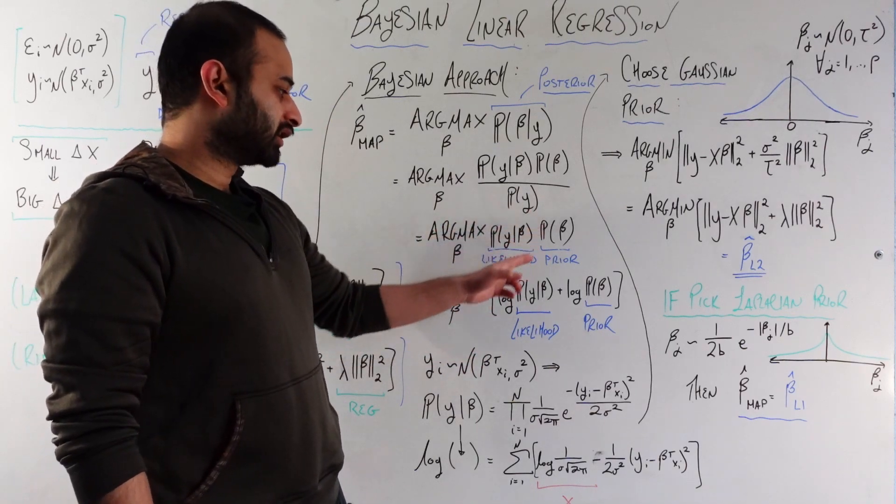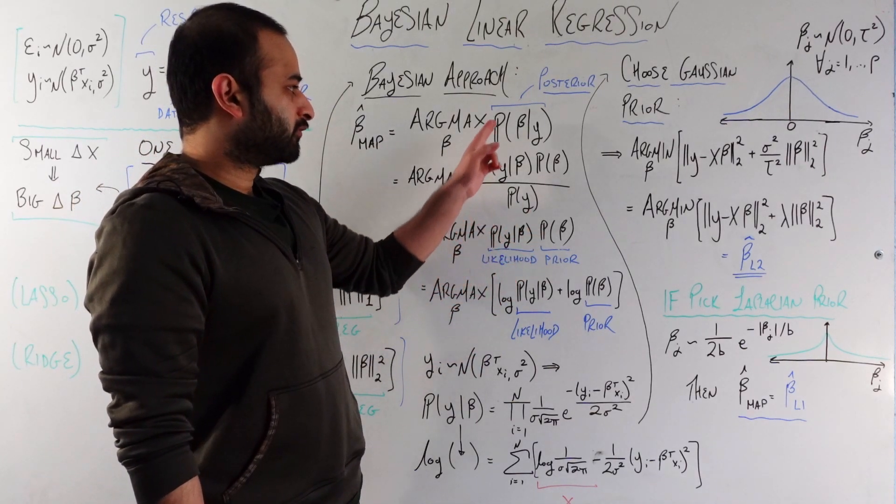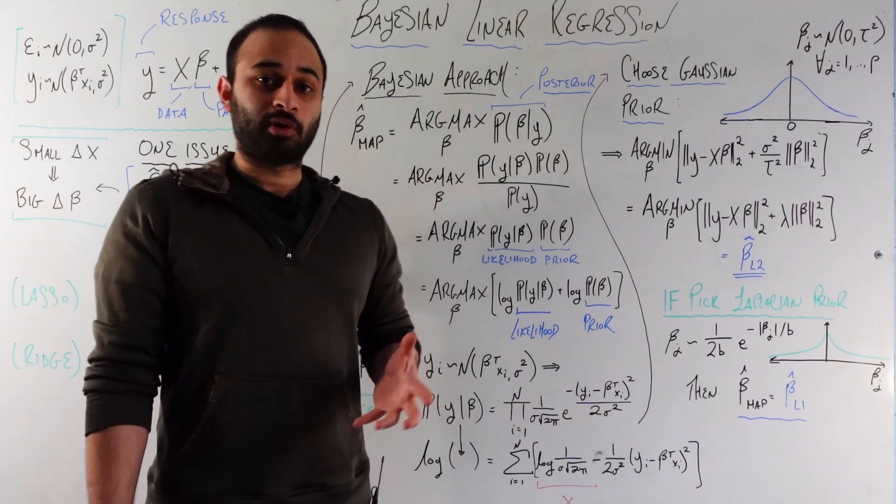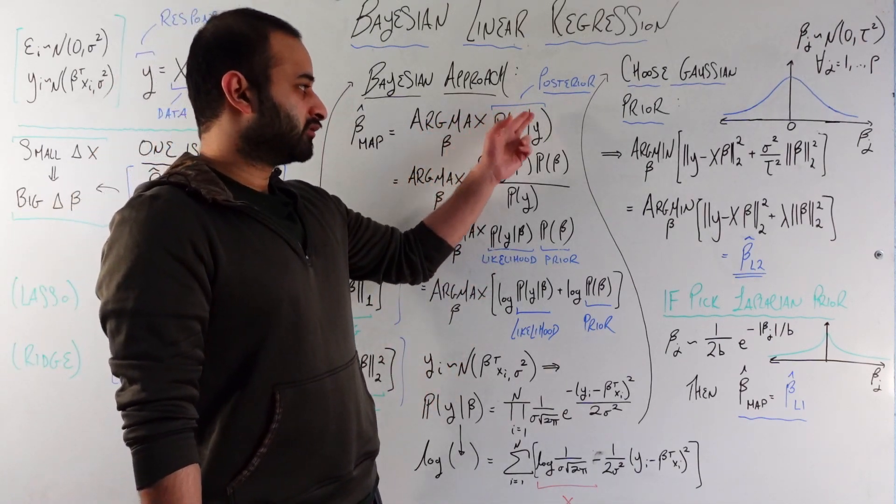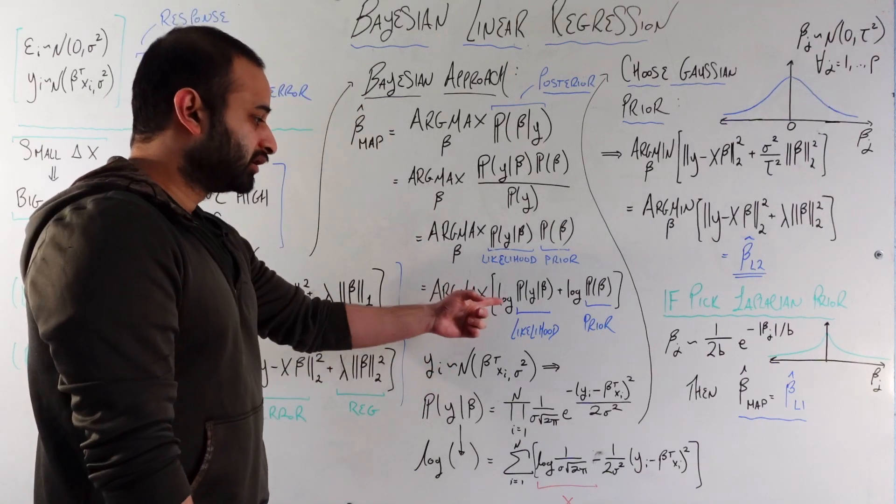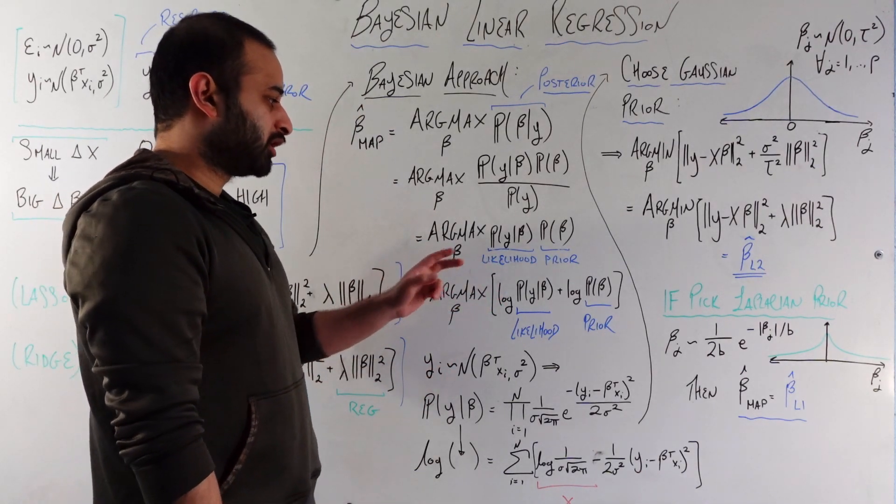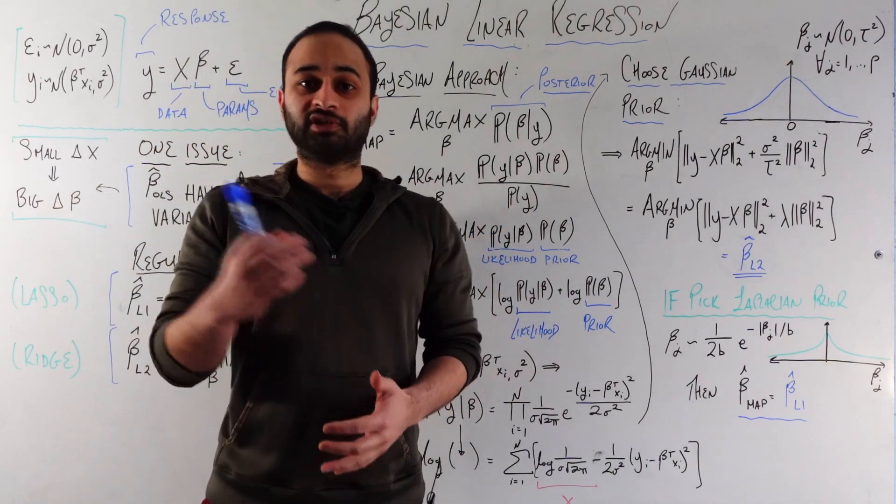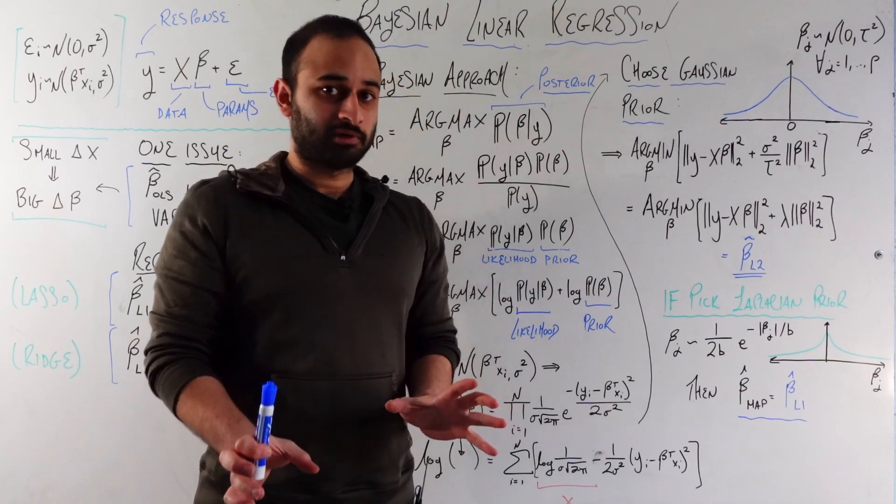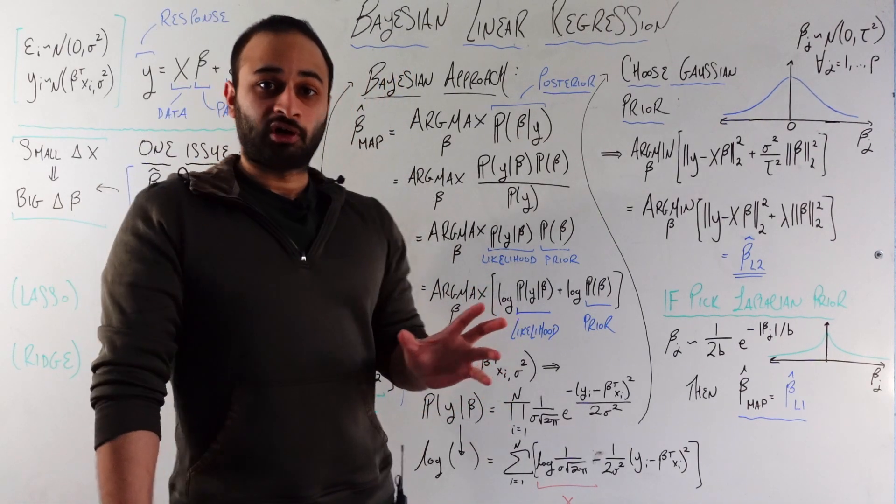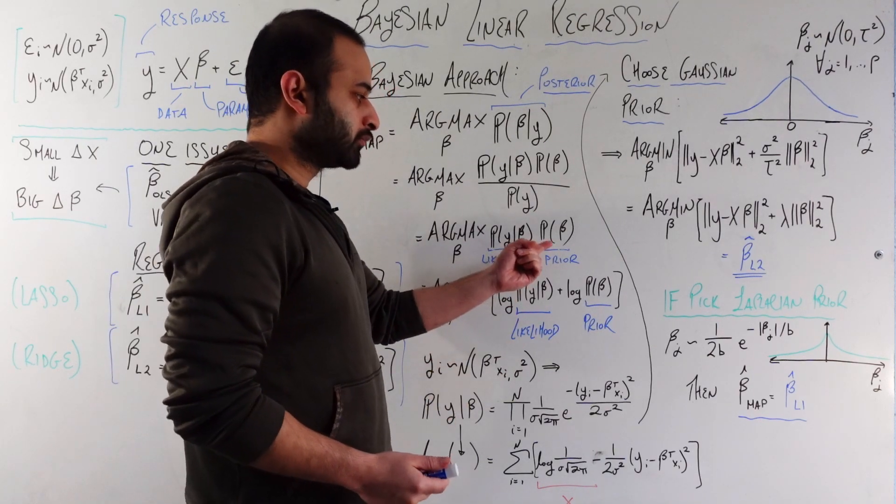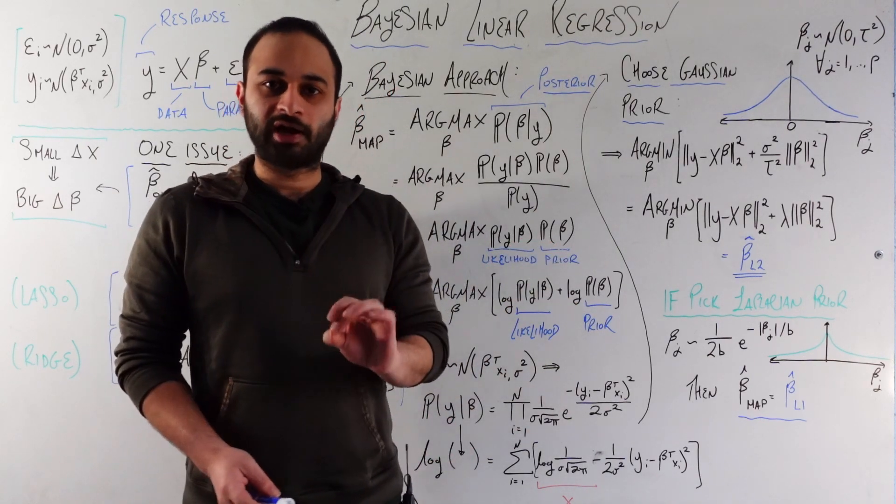We're looking at argmax over all betas of probability of y given beta times probability of beta unconditional on anything. These have special names, which we've already seen. The first one is called the likelihood. It's the exact reverse conditional probability of the posterior. Whereas the posterior asks the question, what's the probability of observing this beta given this data that we see? The likelihood is answering the question about, what's the probability of observing this data given some setting of the betas? Related but fundamentally different question. The other term is going to be the most important one in this video, and that's called the prior.